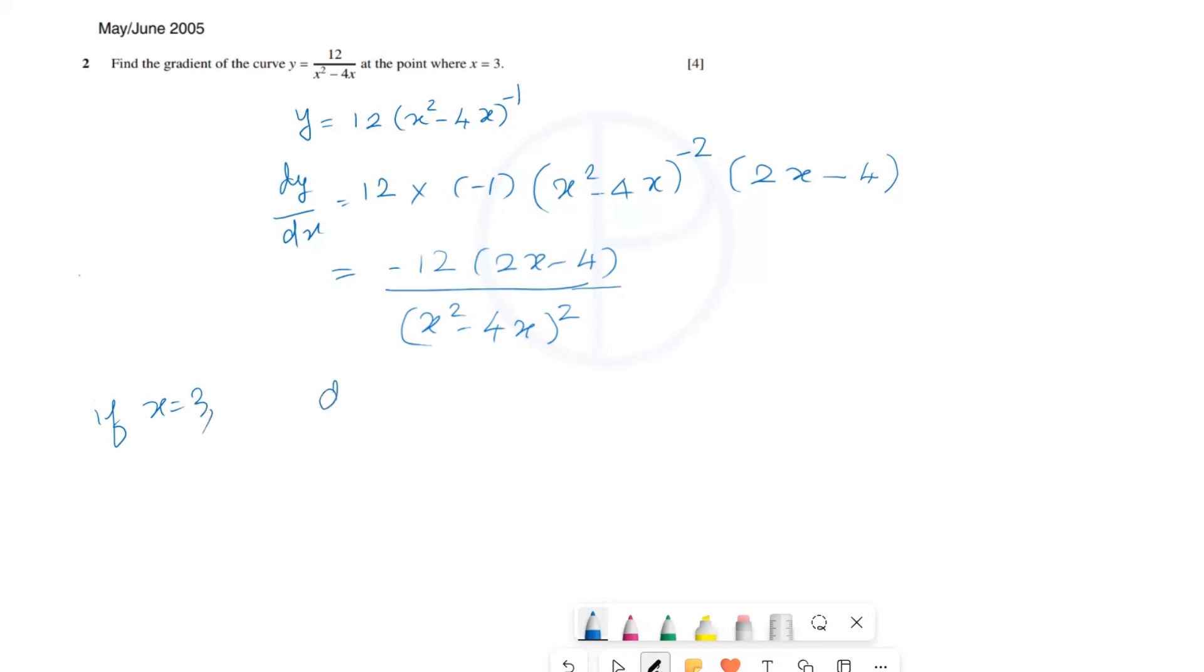dy by dx equal to minus 12 multiplied by 2 multiplied by 3 minus 4, close the bracket, divide by 3 square minus 4 multiplied by 3, the whole power 2. On simplifying this we...